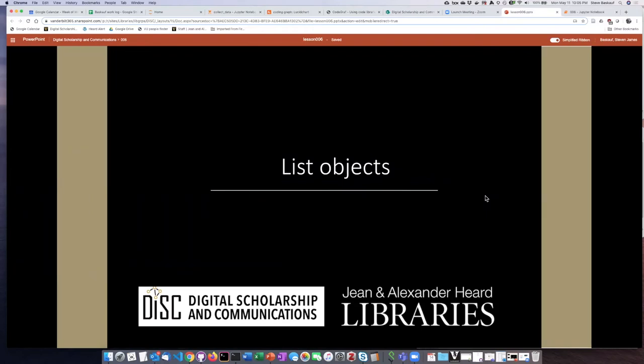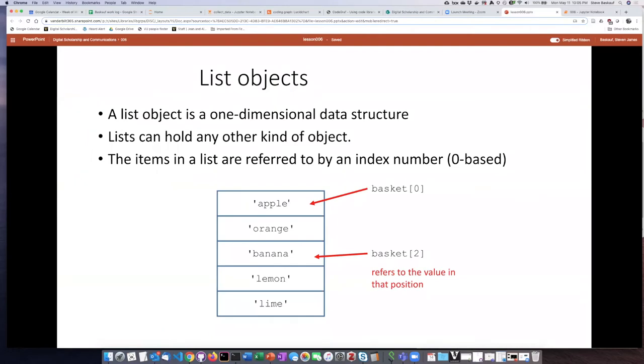So we'll begin by talking about list objects. A list object is a one-dimensional data structure with a number of slots inside. Each one of those slots can hold an item. Lists can hold any other kind of object. In the example I've shown here, the slots in the list are filled with strings, but you could put numbers, booleans, or even mixed kinds of objects in there.